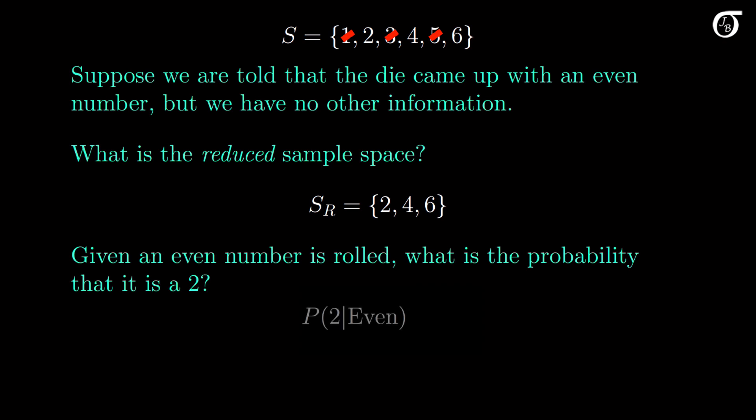Notation-wise, we might write that as the probability of 2 given even, where what comes after the vertical bar is known to be true or assumed to be true for the purposes of the question. The regular probability rules apply to the reduced sample space. Here we now have 3 remaining equally likely sample points. 2 is one of those 3 sample points, so the probability of getting a 2, given we rolled an even number, is 1 out of 3.